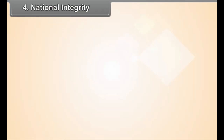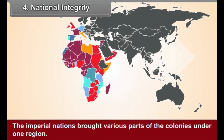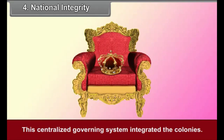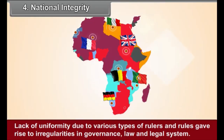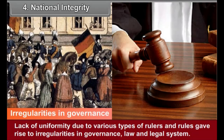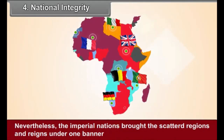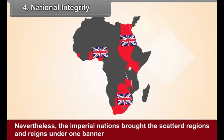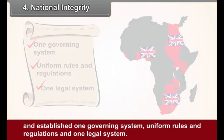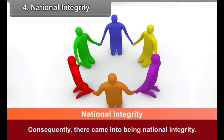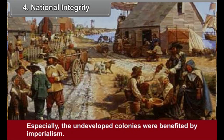Fourth, national integrity: the imperial nations brought various parts of the colonies under one region. This centralized governing system integrated the colonies. Before the imperial reign, most of the colonies were divided and governed by various rulers. Lack of uniformity gave rise to irregularities in governance, law and legal systems. Nevertheless, the imperial nations brought the scattered regions under one banner, establishing one governing system, uniform rules and regulations and one legal system. Consequently, national integrity came into being, and especially undeveloped colonies were benefited.